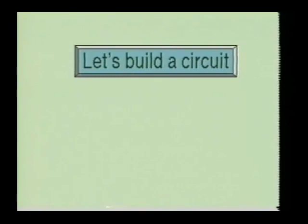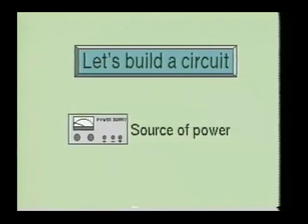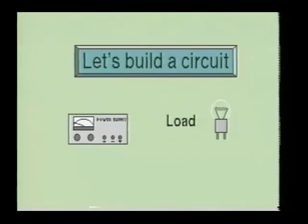For any electrical circuit to operate properly, it must first meet certain requirements. First, there must be a power source from which the electrons may leave and return. The power source could be a battery, a solar cell, a power supply, or any device which generates an electrical voltage. The power source produces the pressure which forces the current through the circuit and also produces the current which flows through the circuit. Next, we must have a load which uses the electricity that is produced by the power source. The load could be a light bulb, resistor, motor, transformer, integrated circuit, or any other device which uses electricity.